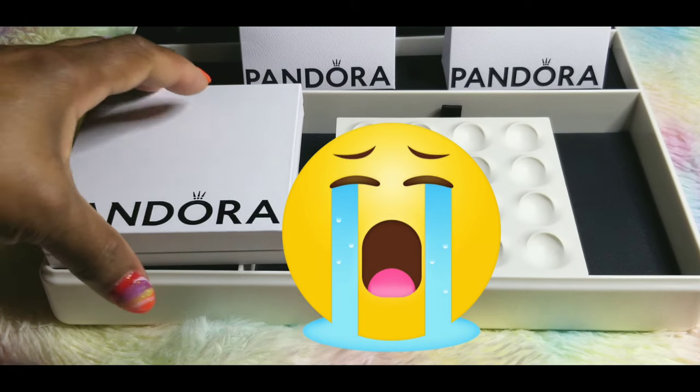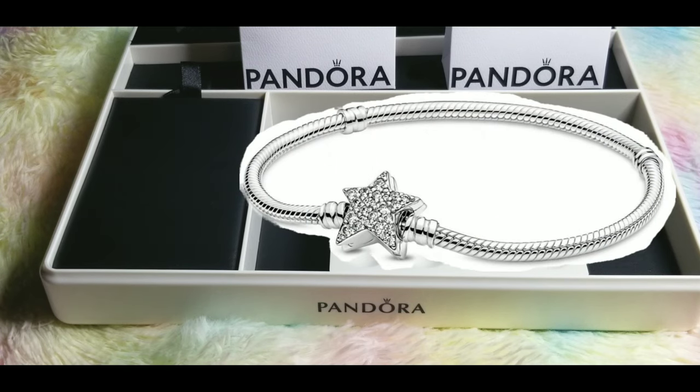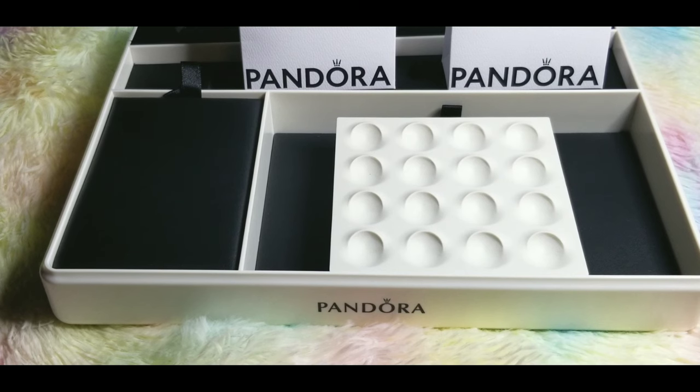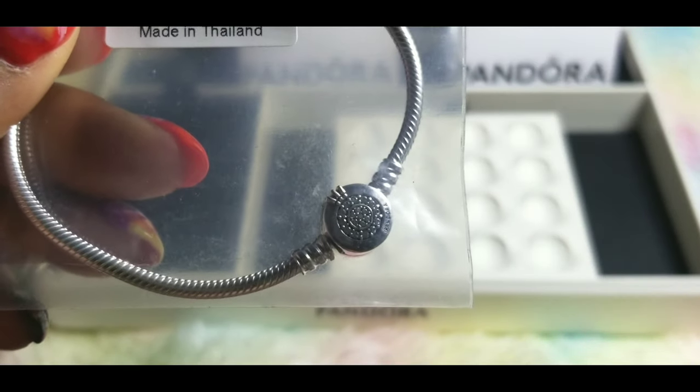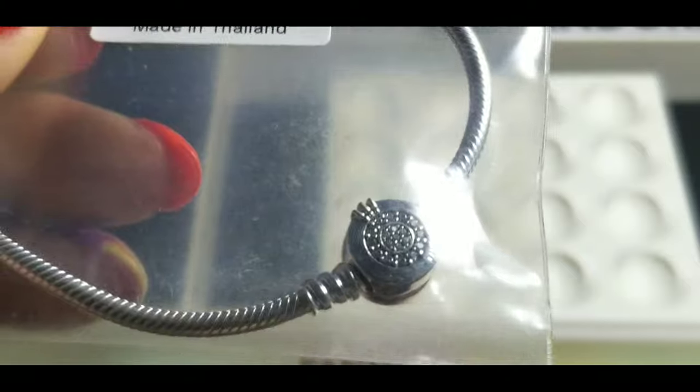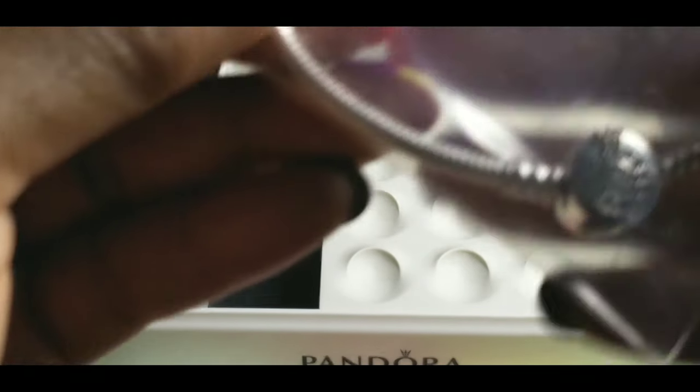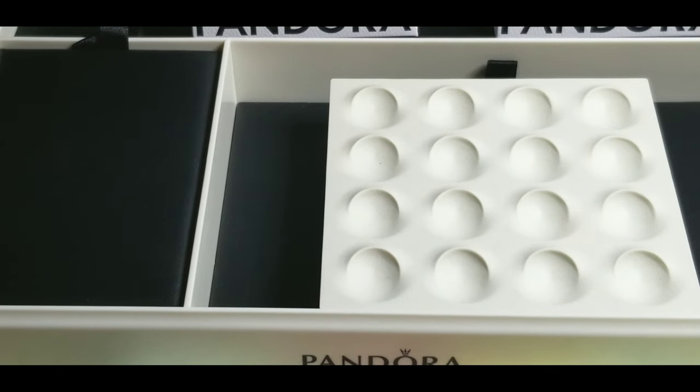I placed my order online. There was a mix up. I ordered, I wanted the asymmetrical star bracelet as my free bracelet because no matter what, I already knew the charms and or safety chain that I was going to get. The asymmetrical star, you had to spend the $180 to get that bracelet for free. My order came, it wasn't the asymmetrical bracelet. It was, and it's still in the package as you can see. The Pandora crown signature bracelet is what came.